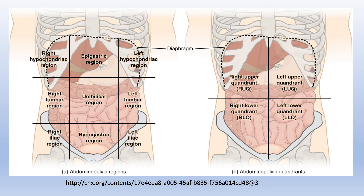Lastly, the left lower quadrant houses the majority of the small intestine, some of the large intestine, the left female reproductive organs, and the left ureter.